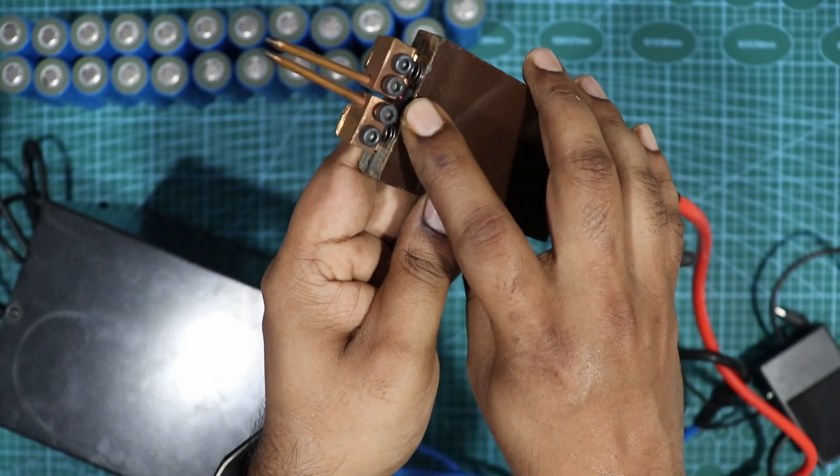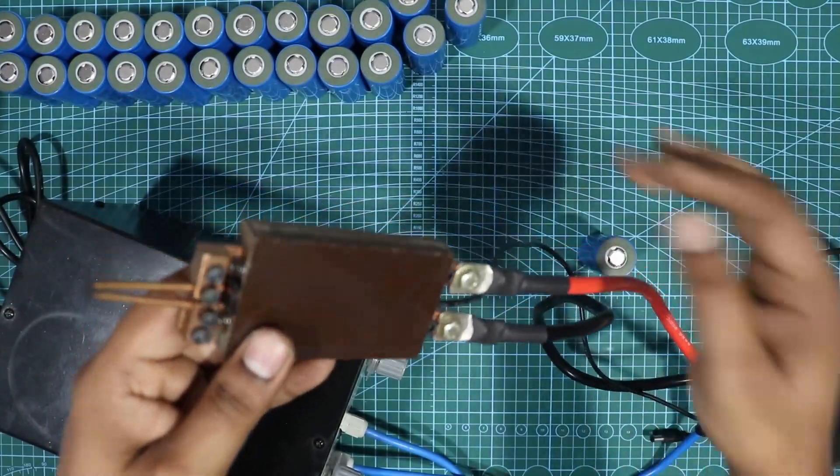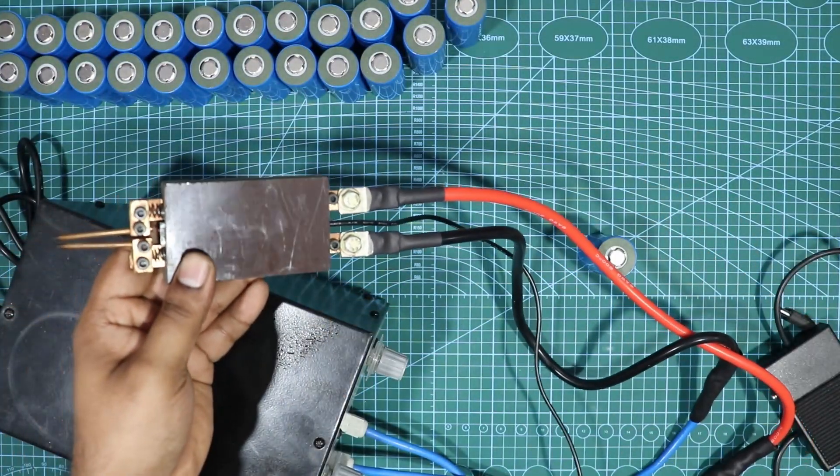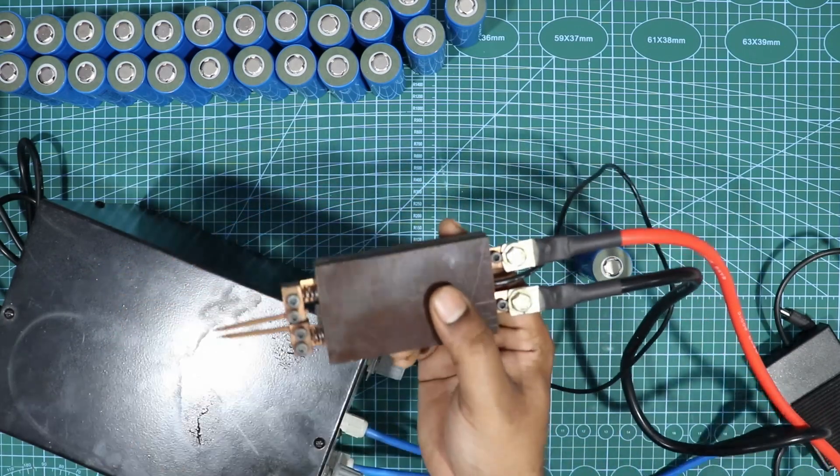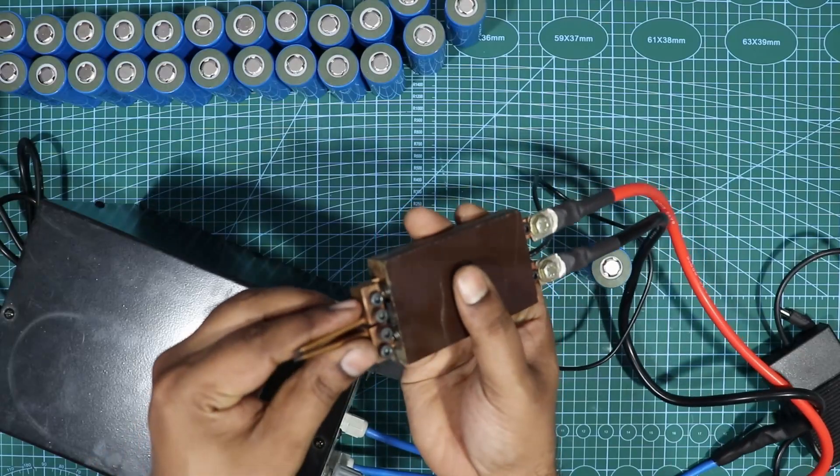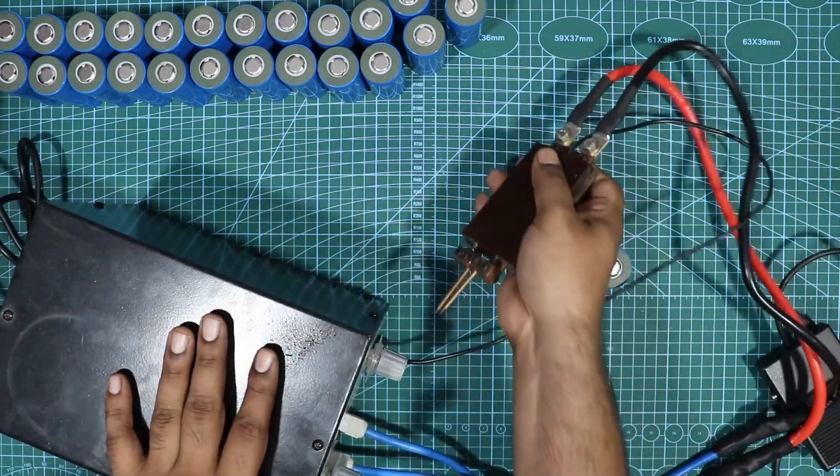And then it'll trigger it based on the pressure. So whenever you press it, it'll trigger and it'll do a spot weld. And this plug would directly go inside the switch socket, so this is a pretty simple type mechanism.